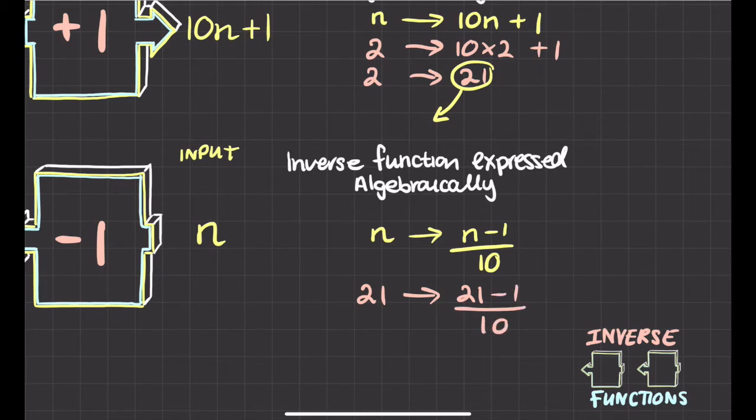What happens to this? We're going to do 21, then we have to take away 1, and then we divide it by 10. So that gives me an answer of 21 take away 1 is 20, 20 divided by 10 is 2.